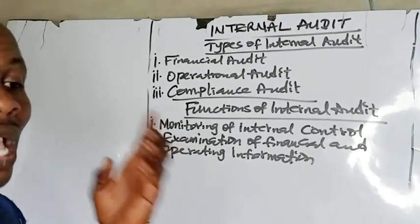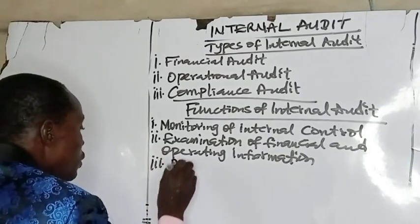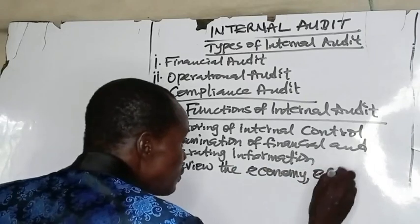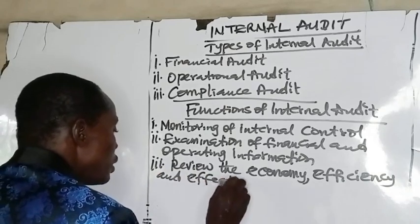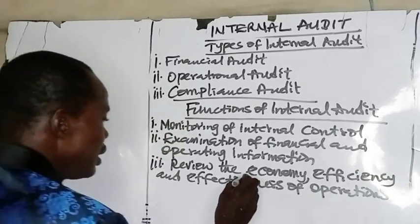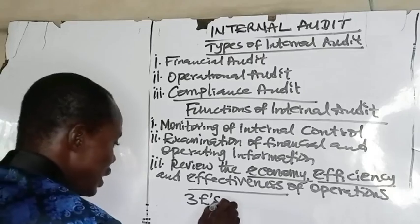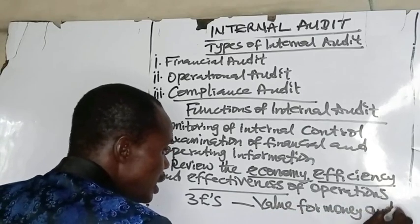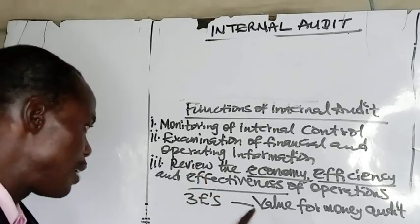Number three function is to review the economy, efficiency, and effectiveness of operations — the three E's. This is also referred to as value for money audit. Internal audit will be asked to review the value for money audit.